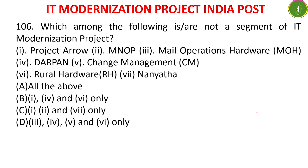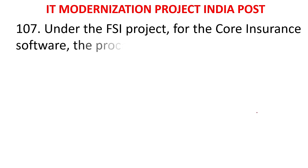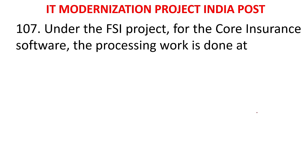The answer is C - 1, 2, and 7 only are not segments of IT modernization project. Project Arrow is not a segment, MNOP is not a segment, and NANYATA (7th) is not a segment of IT modernization project.